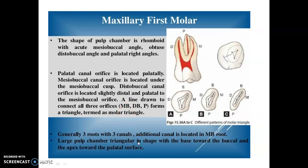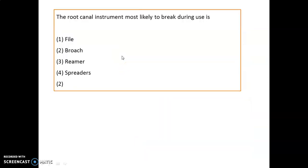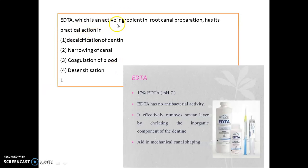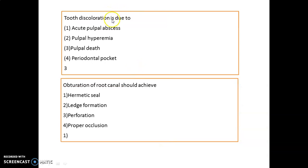The root canal instrument most likely to break during use is the broach. GG drills are useful in making radicular access, and for post space preparation, piezo dimmers are used. EDTA, the active ingredient in root canal preparation, has specific action in decalcification of dentine. We use 17.5% EDTA with a pH of around 7. EDTA has no antibacterial activity; it removes smear layer by chelating the inorganic component of dentine.